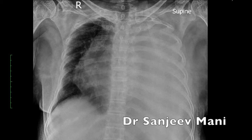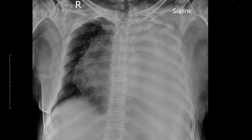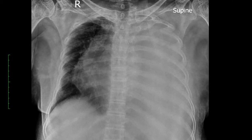This is a chest X-ray AP view of an elderly woman taken in the ICU. What we see here is a complete white-out or a completely opaque left hemithorax. What is important to note here is that there is cardiomediastinal shift.